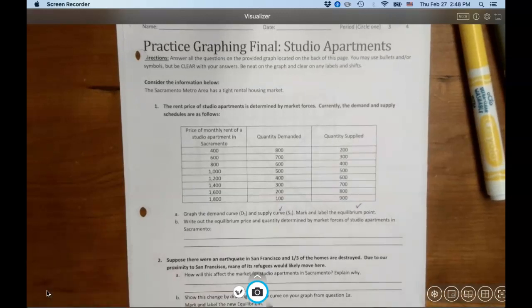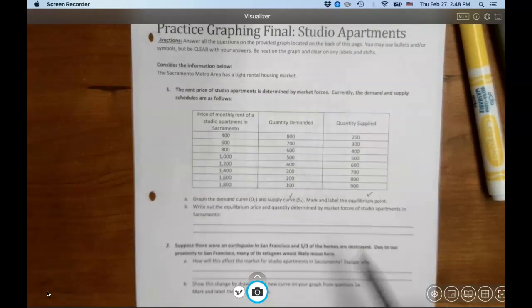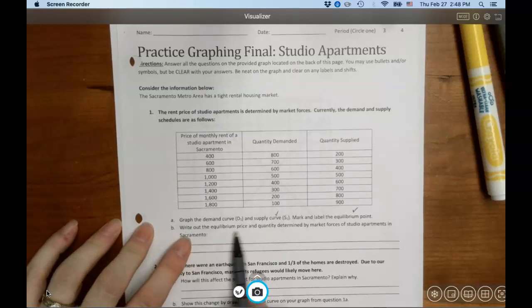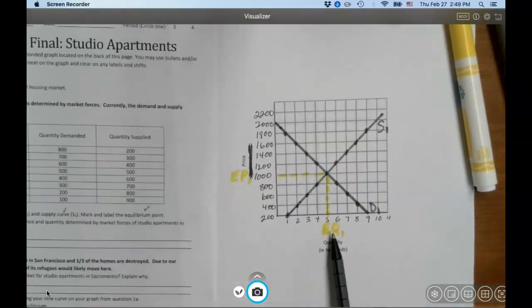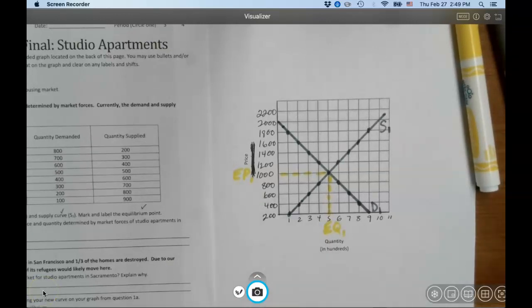Otherwise, some students who don't pay attention to my instructions of not skipping ahead, they start losing points right down here because they lose track of what's going on. Okay, so write out the equilibrium price and quantity, equilibrium quantity determined by market forces. So now you describe in English, in a full sentence, what's going on here. You did that on yours and I'll do that on mine.